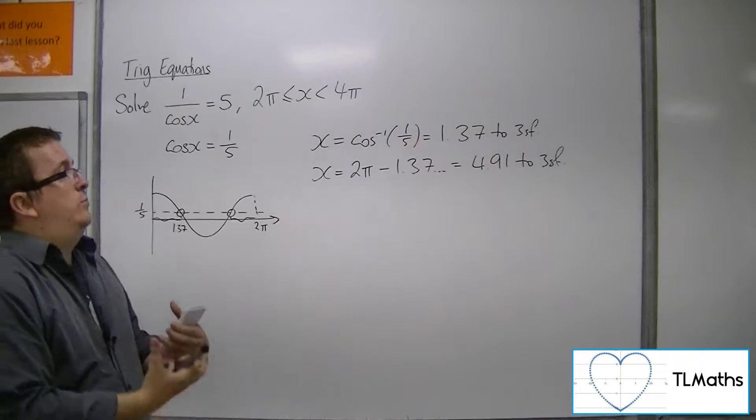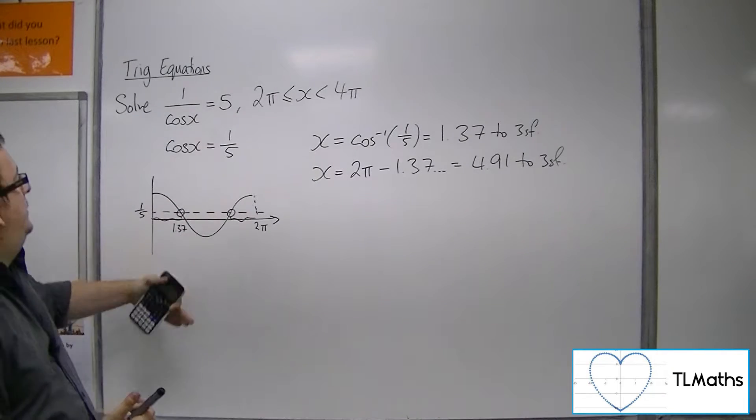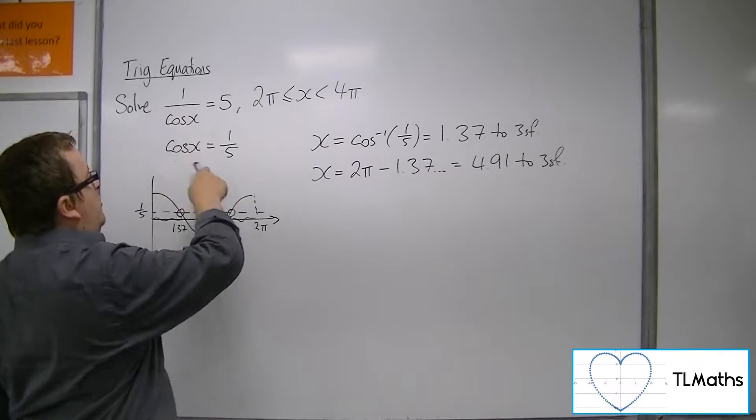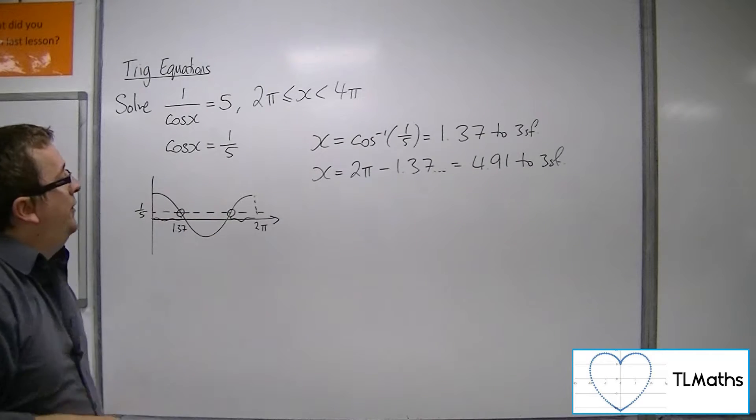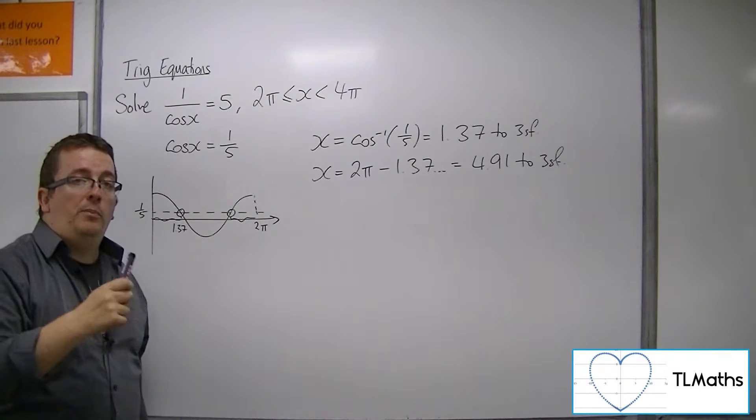So just as I did in the previous video, I would have gone through the same process. I would have taken the reciprocal of both sides, sketched cosine, and found the two solutions between 0 and 2π.